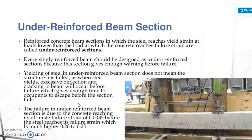The failure in an under-reinforced beam section is due to the concrete reaching its ultimate failure strain of 0.0035 before the steel reaches its failure strength, which is much higher — approximately 0.20 to 0.25.